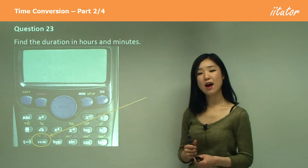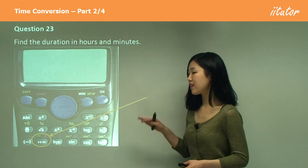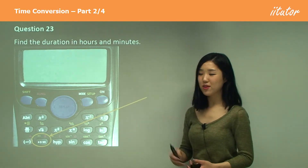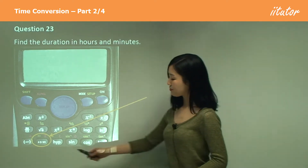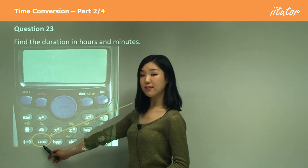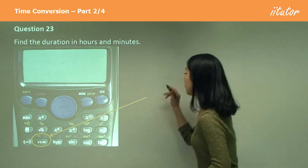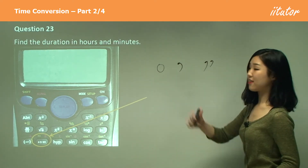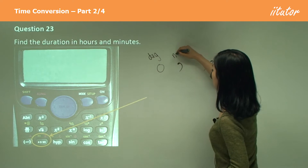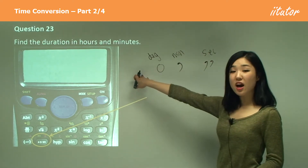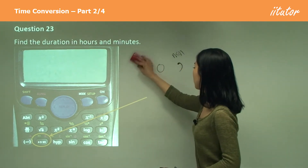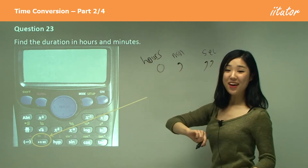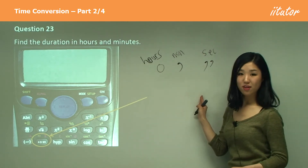I want you to get used to using the calculator to answer these kinds of questions, because it takes so little time — you can save a lot of time in your exam. Watch very carefully: that button is the one we use for degrees, minutes and seconds. Degrees is like a little apostrophe, and double apostrophe is seconds. In time, we don't say degrees — we say hours. So treat this button as the hours, minutes and seconds button when calculating differences between times.